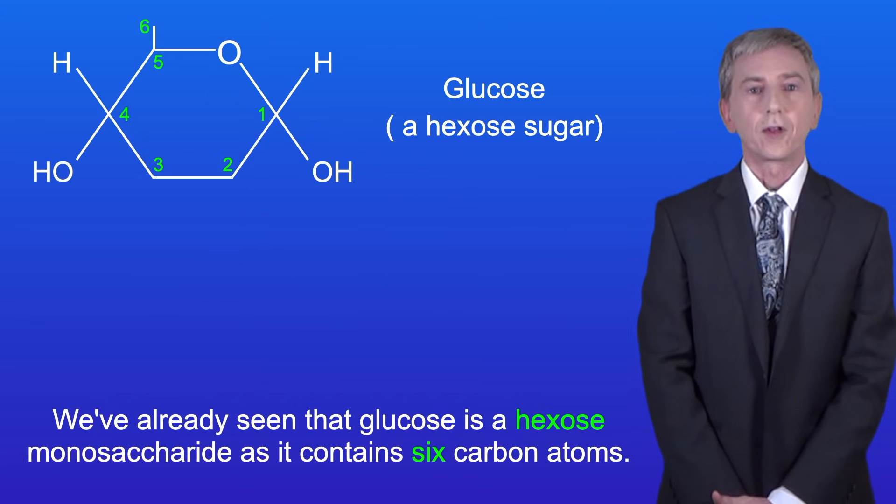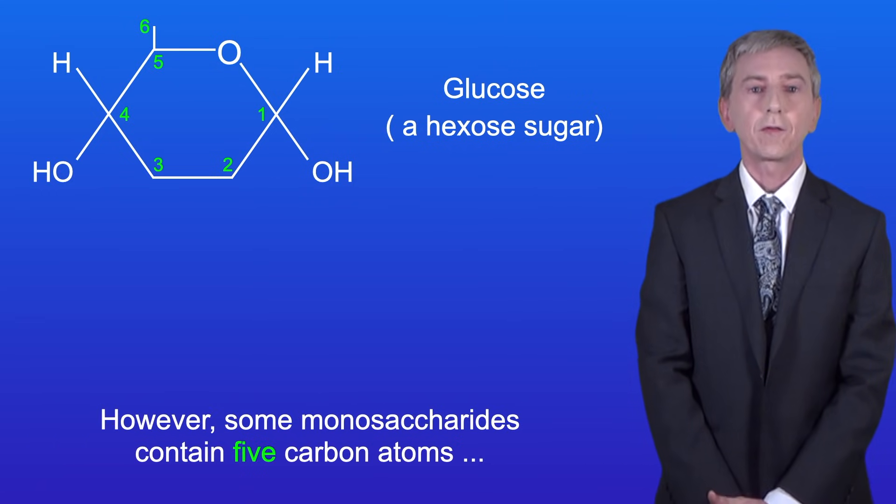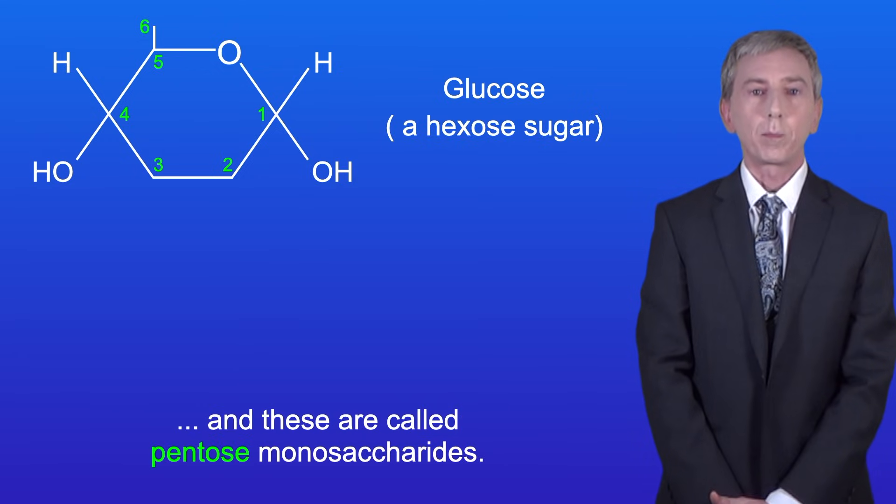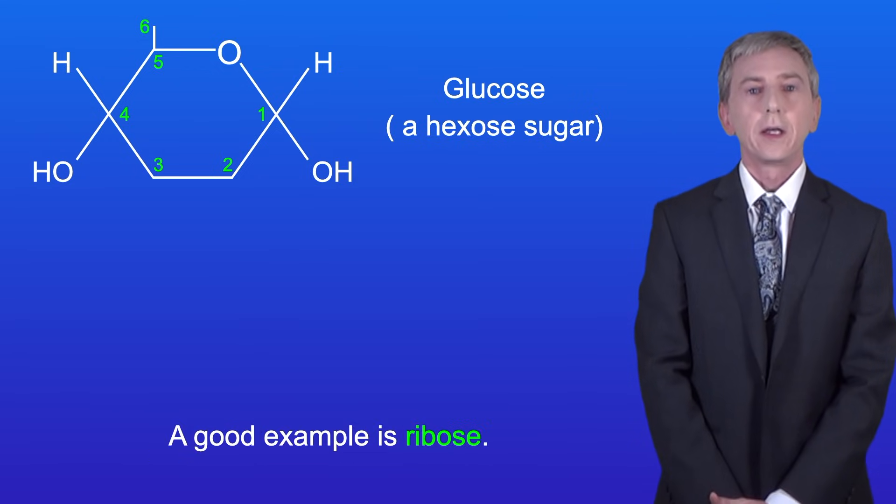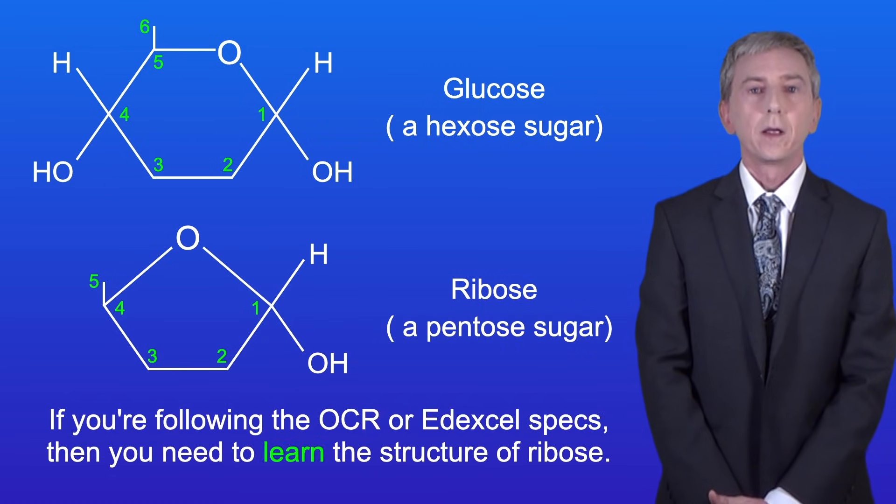Now we've already seen that glucose is a hexose monosaccharide as it contains six carbon atoms. However some monosaccharides contain five carbon atoms and these are called pentose monosaccharides. A good example is ribose and I'm showing you the simplified structure of ribose here. If you're following the OCR or Edexcel specs then you need to learn the structure of ribose.